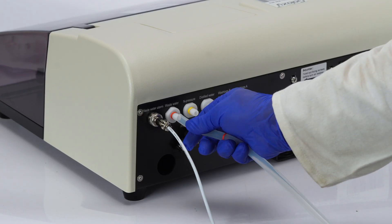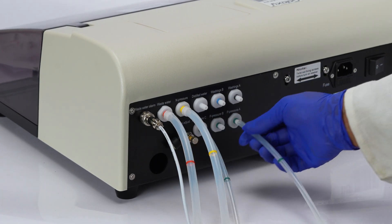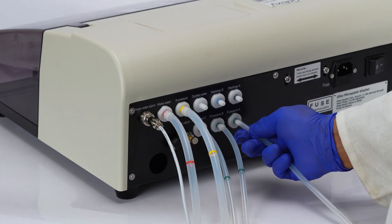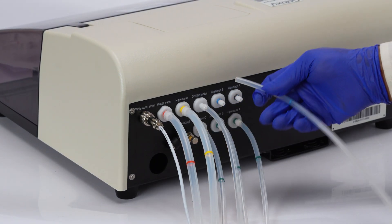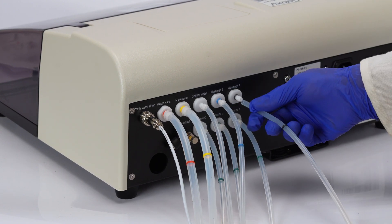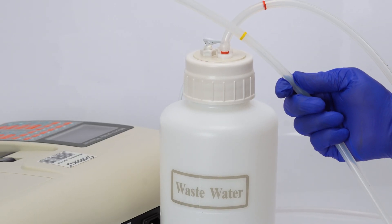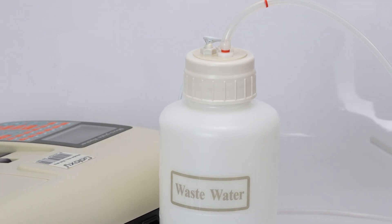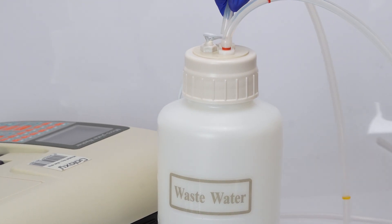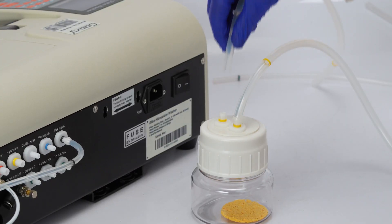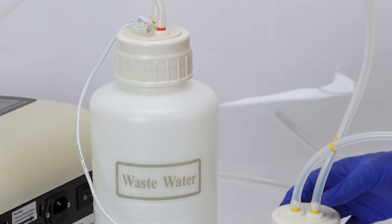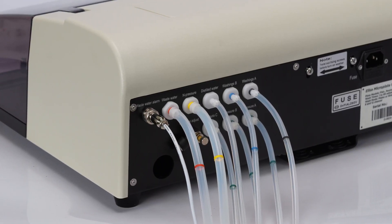Attach the solution bottles and the distilled water bottle to the washer using the color-coded pipes. Connect the waste bottle sensor and pipe, then link the pressure bottle to the waste bottle and the machine with the appropriate pipe.